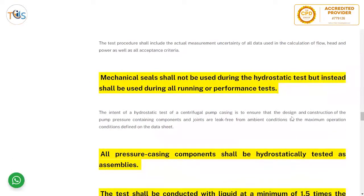Mechanical seals shall not be used during the hydrostatic test; instead, a slave seal is used to pressure-test the casing. This is because mechanical seals are not designed for hydrostatic test pressure, which is 1.3–1.5 times the maximum allowable working pressure and might damage the seal. Once the hydrostatic test is done, the slave seal is removed and the mechanical seal is installed for the performance test, where you want to verify the seal performs and does not leak under actual working conditions.